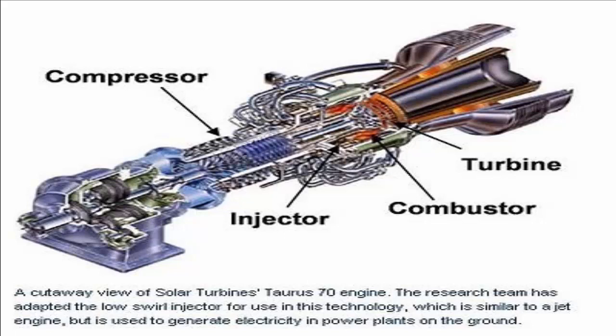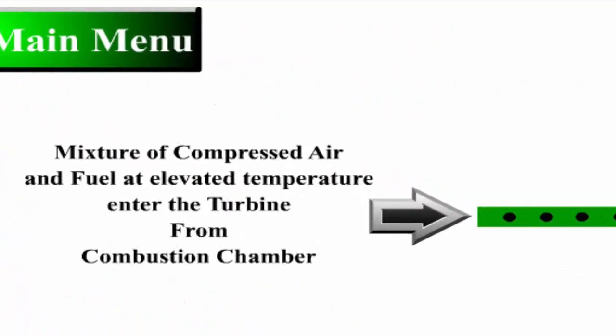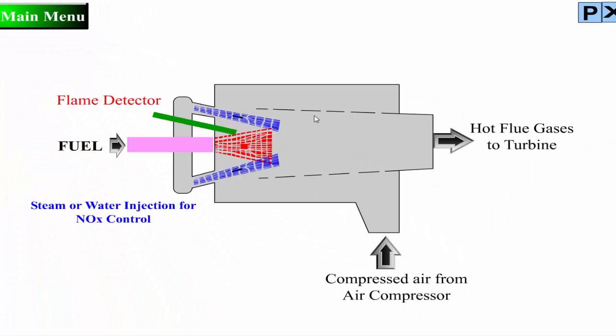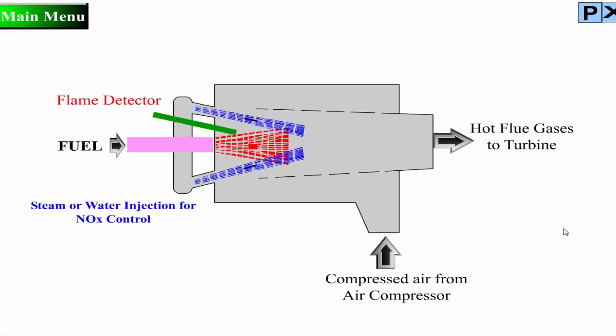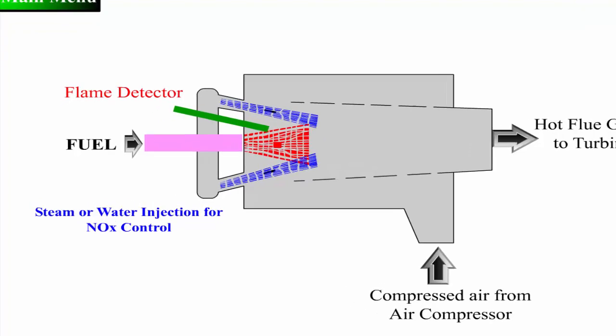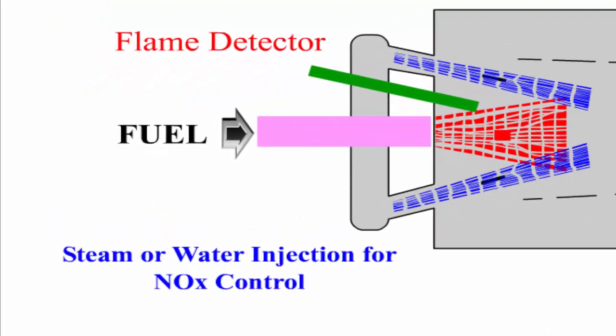Aeroderivative engines are derived from jet engines, as the name implies, and operate at very high compression ratios, typically in excess of 30. Aeroderivative engines tend to be very compact and are useful where smaller power outputs are needed. As large frame turbines have higher power outputs, they can produce larger amounts of emissions and must be designed to achieve low emissions of pollutants, such as NOx.